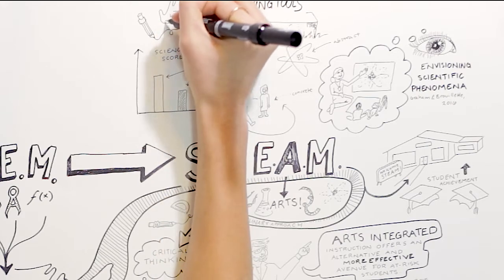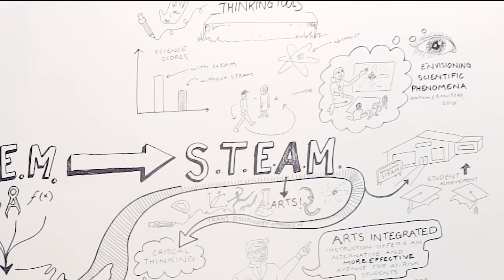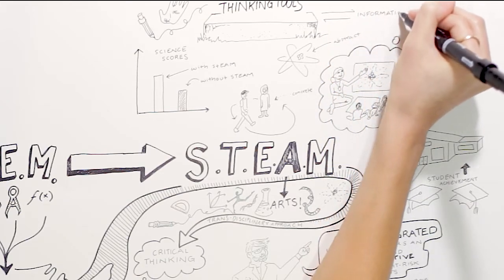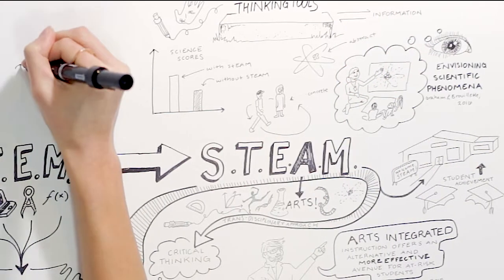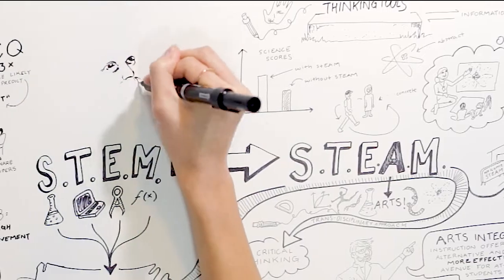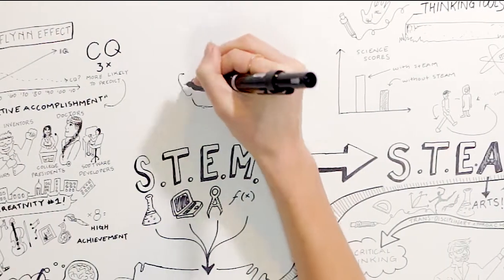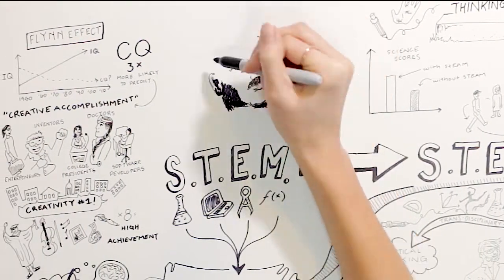These are developmentally appropriate means by which students at this age ought to learn and make sense of information. Although a great deal more research needs to be done to help solidify the connection between student outcomes and arts integration in the science.